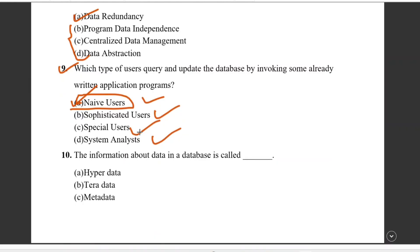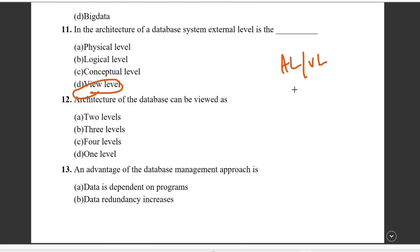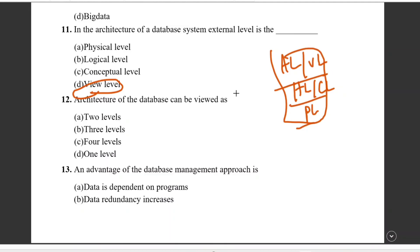Question number ten: the information about data in the database is called metadata — data about data. Question number eleven: in the three-level architecture of a database system, the external level is the view level. The three levels are: view level (application level), logical level (conceptual level), and physical level (internal level).